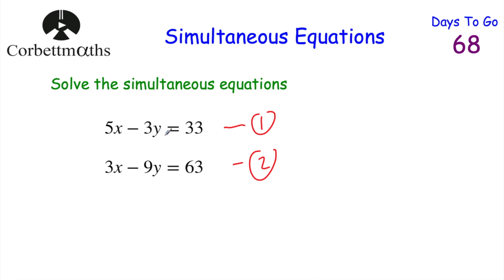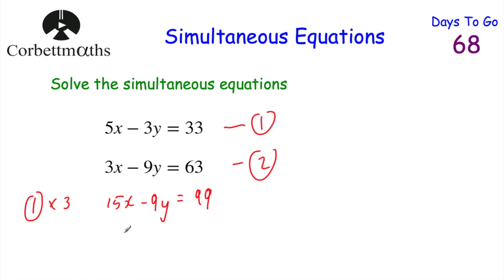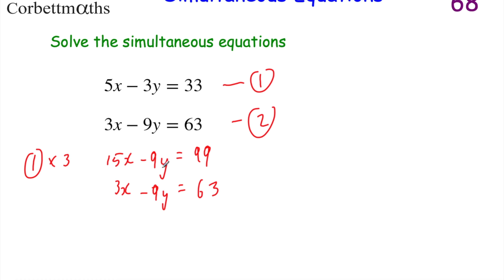So I'm going to multiply equation 1 by 3: 5x times 3 is 15x, minus 3y times 3 is minus 9y, and 33 times 3 is 99. Now equation 2 also has minus 9y. If you've got the same number of a letter — like minus 9y and minus 9y — you can subtract the two equations from each other and they will cancel out. Minus 9y minus minus 9y is minus 9y plus 9y, which is 0.